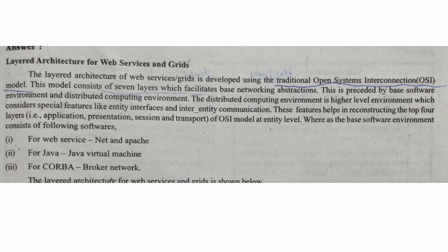The features help in reconstructing the top 4 layers: Application layer, Presentation layer, Session layer, and Transport layer. These are the top 4 OSI model layers. The base layers include the base layer, service layer, data link layer, and physical layer. The base software environment includes web servers such as Netend Apache, Java, Java Virtual Machine, and CORBA Broker Network.